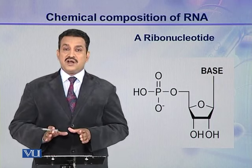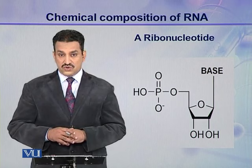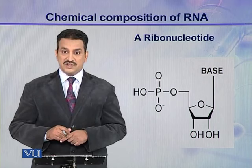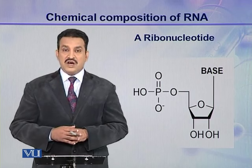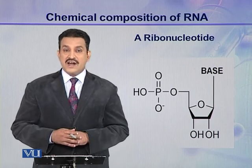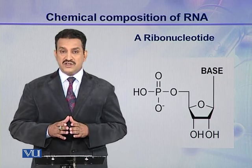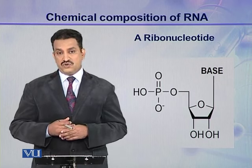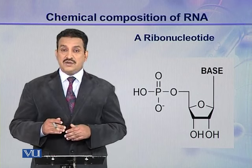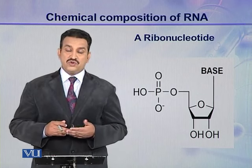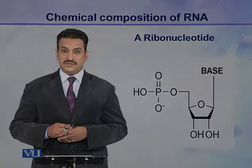So this is a complete ribonucleotide. It consists of all three components: a nitrogenous base, a pentose sugar, and a phosphoric acid. These three components are joined together and they make a ribonucleotide. And this ribonucleotide, by combining with other ribonucleotides, makes a ribonucleic acid. Thank you.